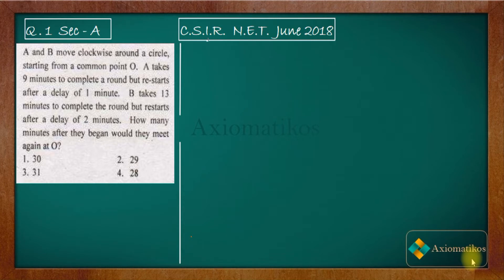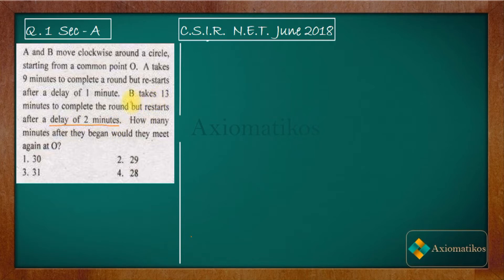Hello dear students, welcome to ExeoMatic course. This video is part of the solution series for CSIR NET June 2018, and we are doing Problem 1 of Section A — a problem of general aptitude. A and B move clockwise around a circle starting from a common point. A takes 9 minutes to complete a round but restarts after a delay of 1 minute. B takes 13 minutes to complete the round but restarts after a delay of 2 minutes. You have to find out how many minutes after they begin would they meet again at O.